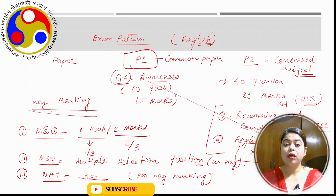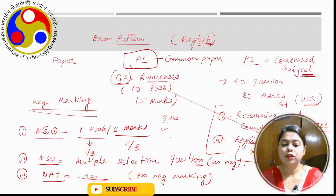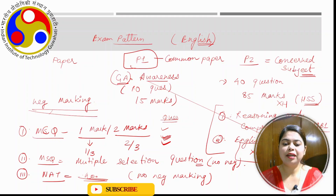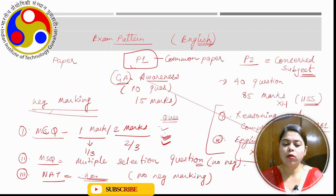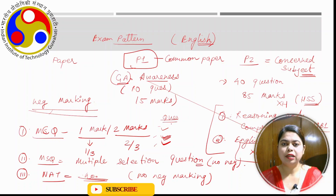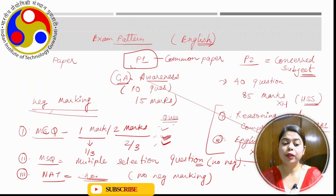A common doubt is: suppose a question has three correct options out of four, and a student selects only two. Will they get marks for that? The answer is no — there is no partial marking in MSQ. If you select all three correctly, then only you get the marks. If you select partially, you get no marks at all. You have to be careful while solving MCQ, MSQ, and NAT questions.